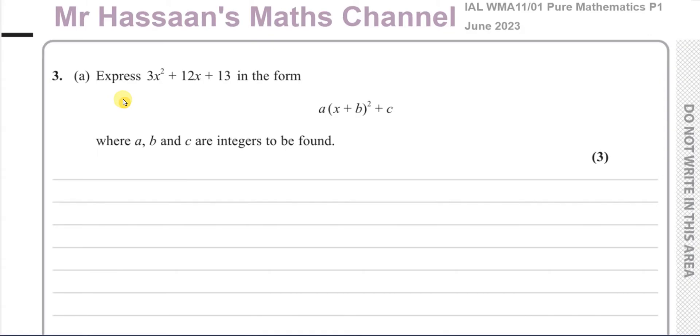Here we have 3a, which is about this quadratic expression, 3x² + 12x + 13, and we need to express it in the form a(x + b)² + c, where a, b, and c are integers to be found. So basically what we're asked to do here is to complete the square for this expression and express it in this format.